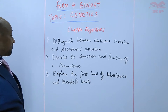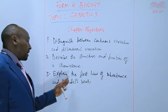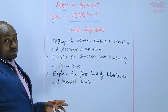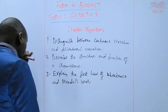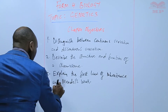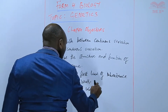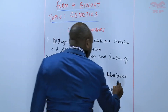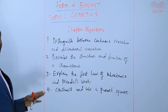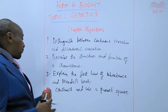The first law of inheritance was formulated by a person called Gregor Mendel. We will be in a position to explain what work this person did in order to come up with the first law of inheritance, also known as the law of segregation. After that, the learner should be able to construct and use a Punnett square, which is a genetic diagram that shows how offspring are arrived at from the parents.